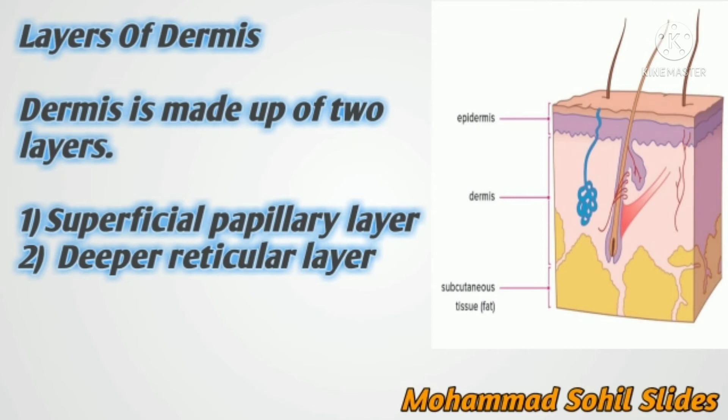The superficial papillary layer projects into the epidermis. It contains blood vessels, lymphatics, and nerve fibers. This layer has some pigment-containing cells known as chromatophores. Dermal papillae are finger-like projections arising from the superficial papillary dermis. Each papilla contains a plexus of capillaries and lymphatics. Papillae are surrounded by ridges extending from the epidermis.